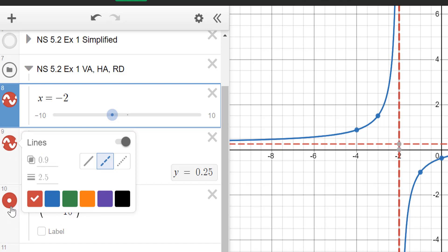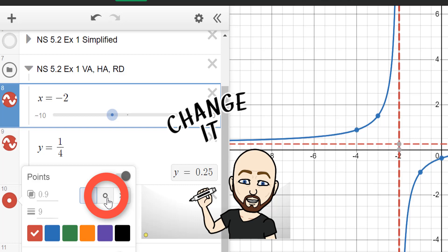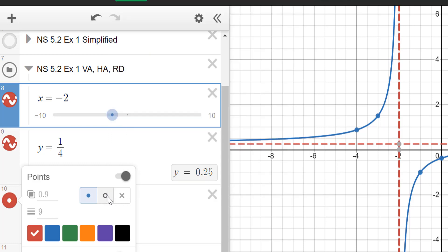Now, the other one down here, our point, our removable discontinuity, that's already red, but we have to make it a hole. All right. So if you look at the three options here for points, you've got a filled in hole or the second one. And that's when we're going to choose. That is going to make the point appear as a hole.